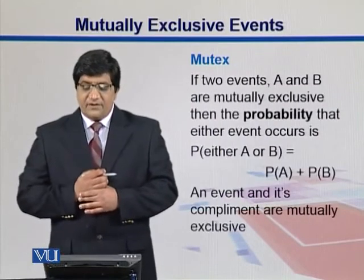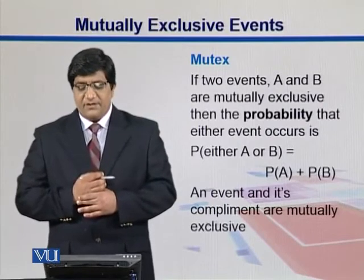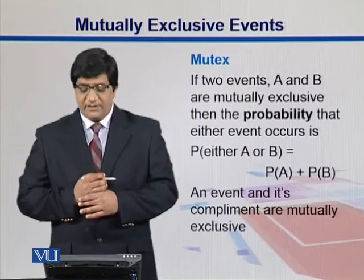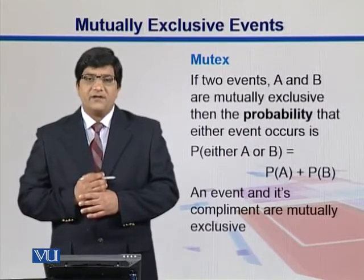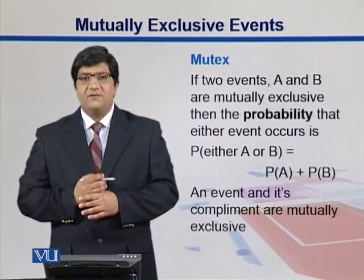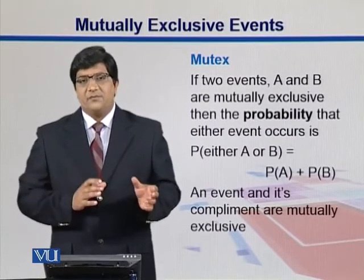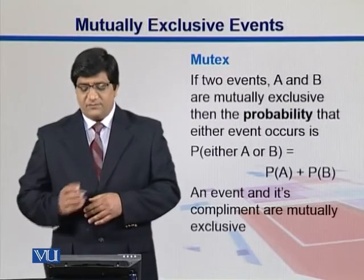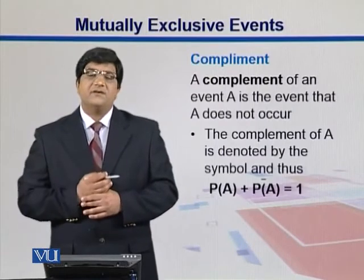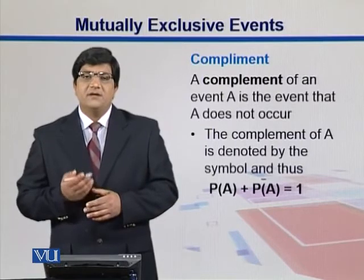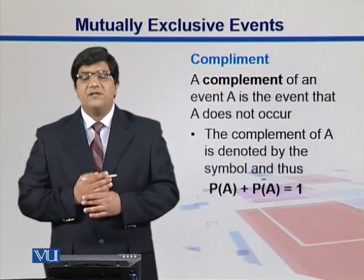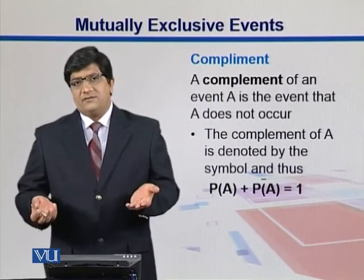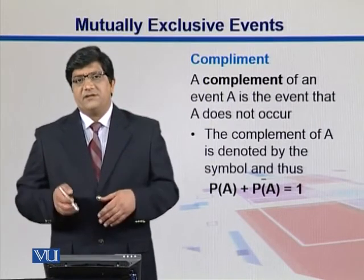If two events A and B are mutually exclusive, then the probability that either event occurs is P(A or B), which equals P(A) plus P(B) — we can simply add their probabilities. An event and its complement are also mutually exclusive. The complement is the probability of something not happening: if the probability of A occurring is P(A), then its complement is the probability of not seeing event A.